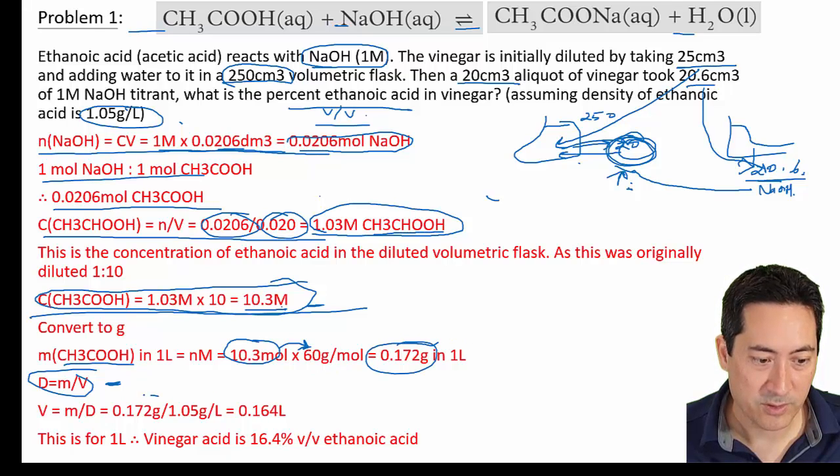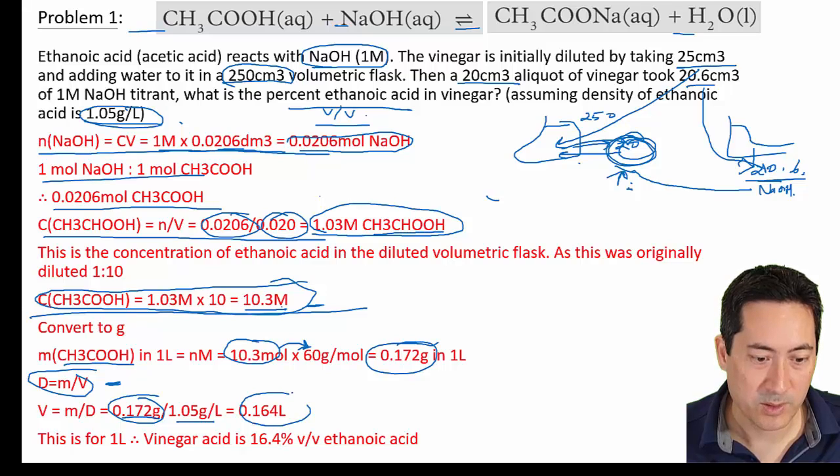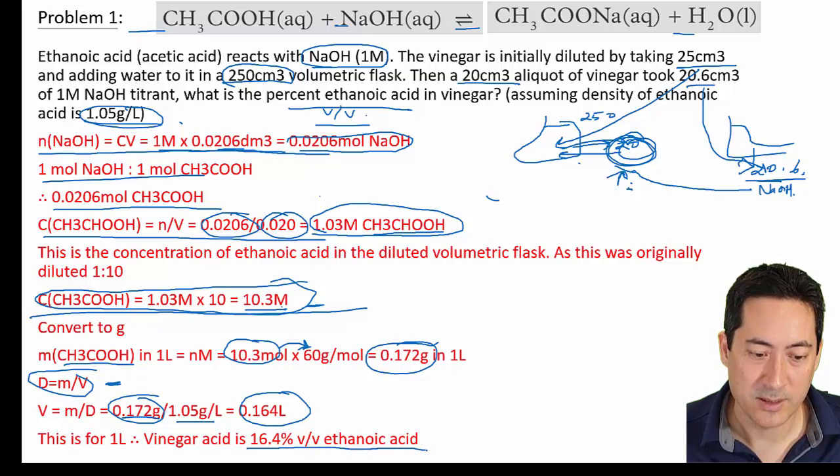The volume of 172 grams, density is mass and volume. So volume will equal mass divided by density. It's 172 grams divided by 1.05, which is up here. We've got 0.164 litres of ethanoic acid in a litre of the solution. Because that's a 1 litre, that's 16.4% ethanoic acid, which is quite concentrated in this original solution.